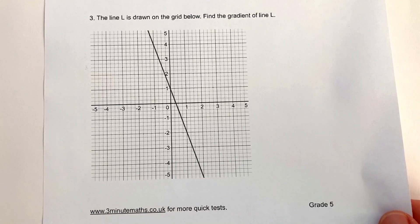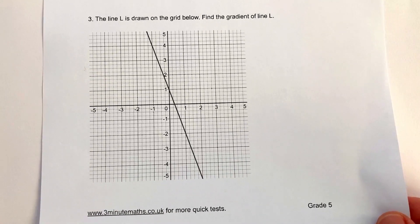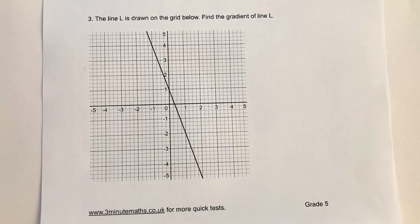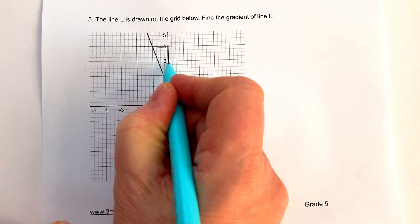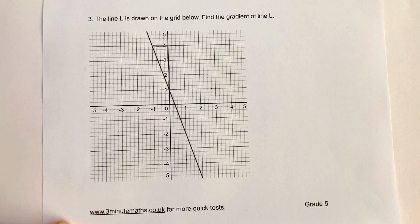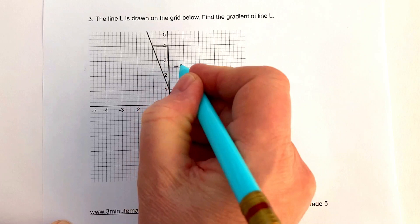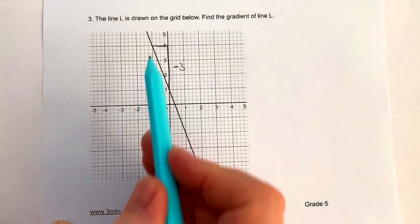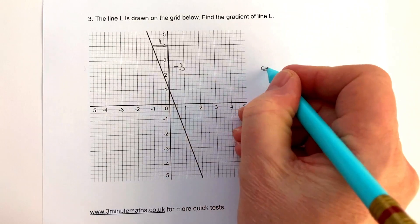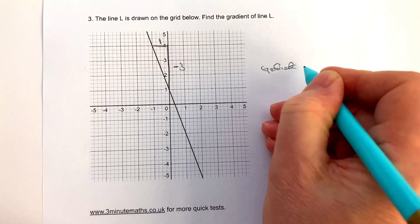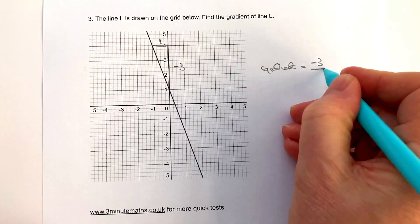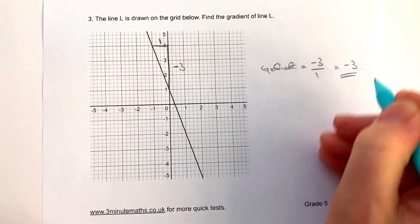Okay, let's have a look at question number three, which is a negative gradient. I'm going to do this slightly differently — I'm going to draw my triangle effectively upside down, because what that does is it tells me the difference in the y coordinates: the difference between four and one, which is actually minus three. Then the difference in the x coordinates is the difference between minus one and zero, which is one. So therefore the gradient is going to be the difference in y, which is minus three, divided by the difference in x, which is one — so the gradient is minus three.